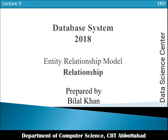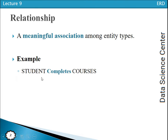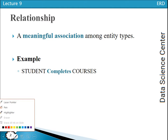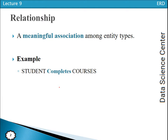A relationship is a meaningful association among entity types. It is the association among the instances of one or more entity types. We say that relationships act like glue that holds together the various components of ER models — for example, associating entity types such as Student and Course.